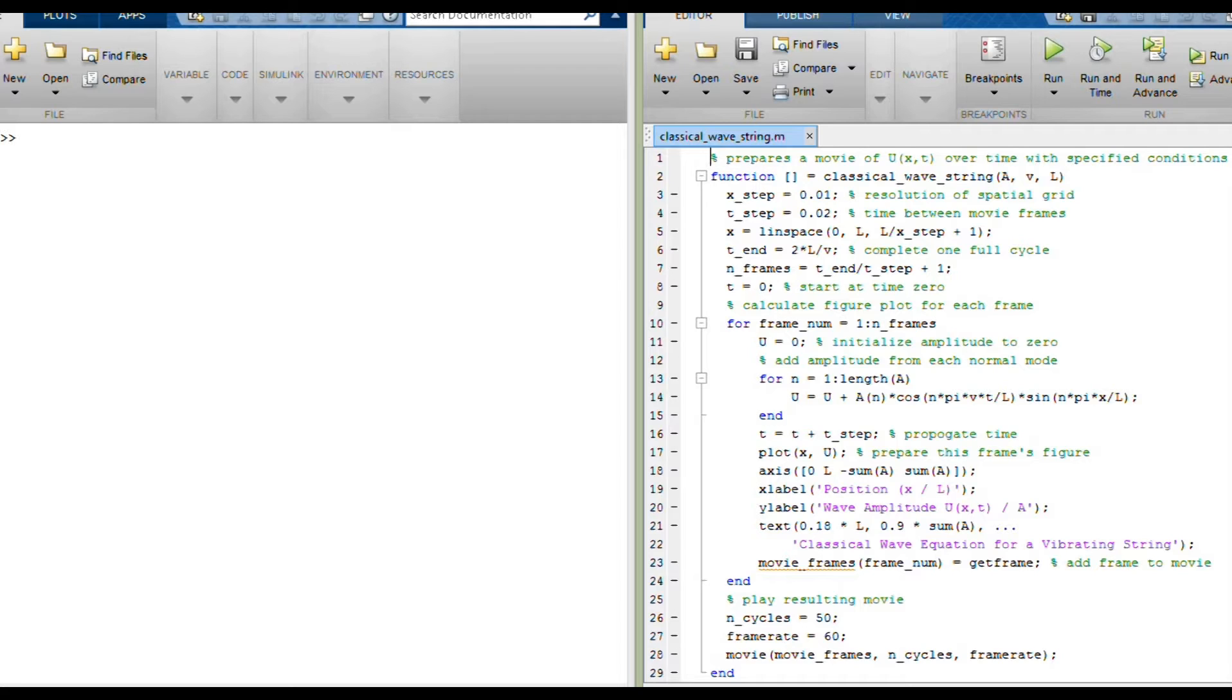So I've written up a little script here in MATLAB. On the right here we have this classical wave string in the .m file. Basically this function takes an input which is some array of the amplitude for the individual normal modes, a set of values of a.